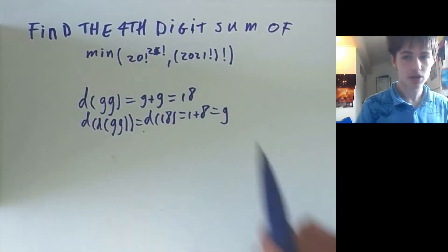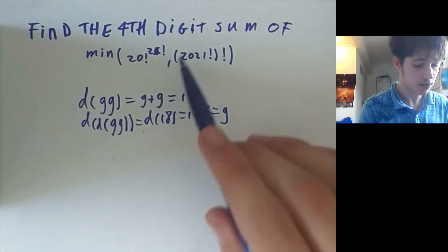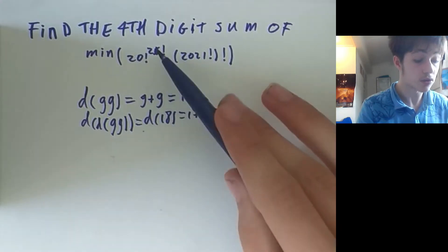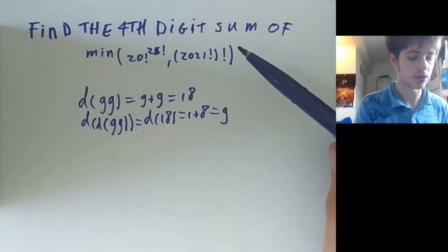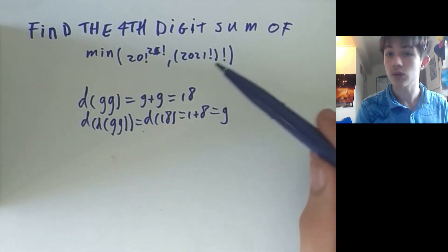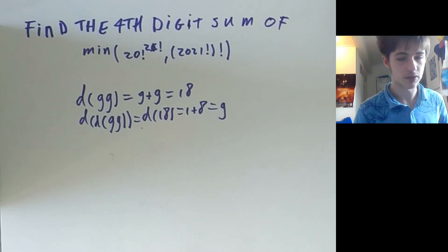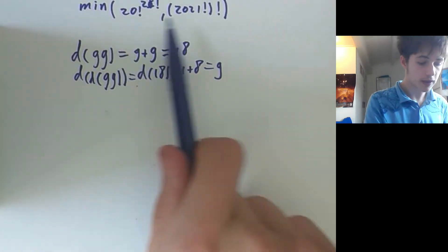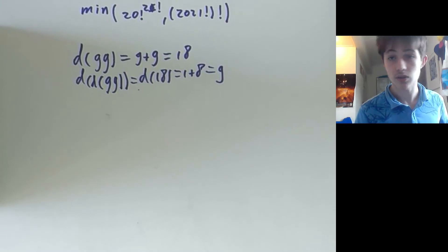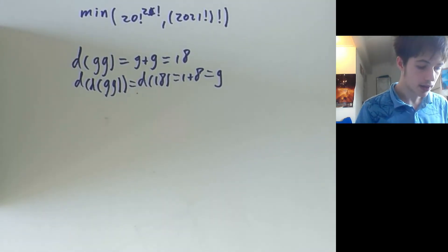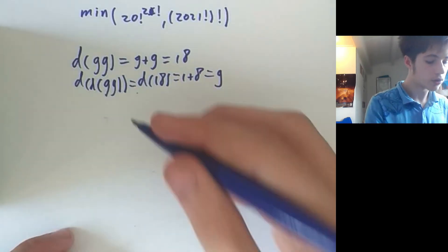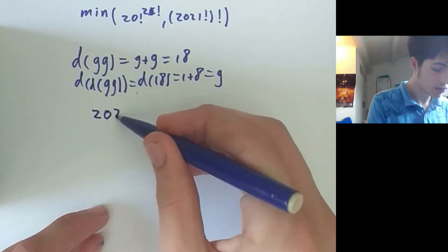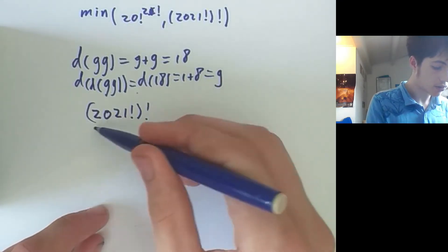We want to find the fourth digit sum — applying the digit sum operator four times in succession — of the minimum of these two numbers: 20 factorial to the power of 21 factorial, and 2021 factorial. So we first have to find out which one is the smallest, or equivalently which one is the biggest. We're going to show that 2021 factorial is the biggest, by showing that 2021 factorial divided by 20 factorial to the power of 21 factorial is greater than one.